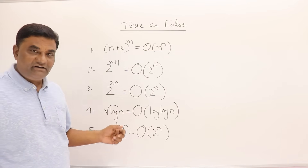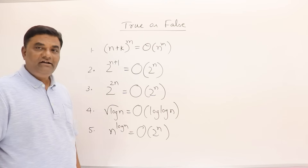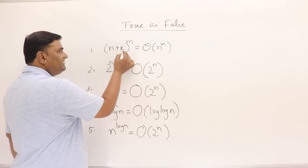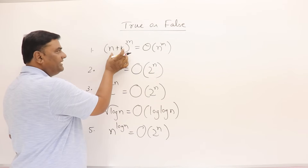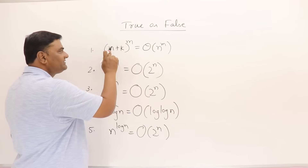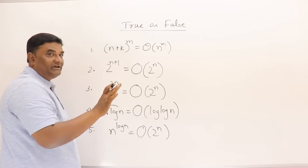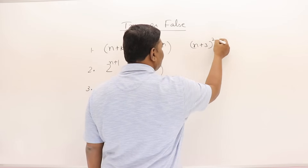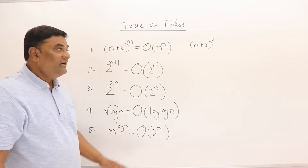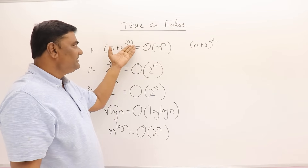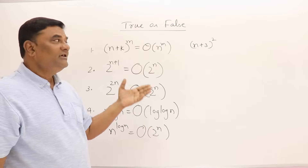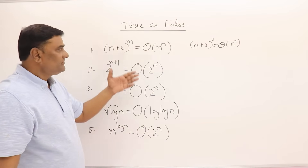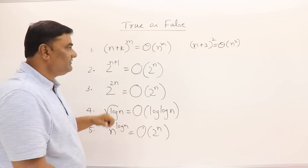Now some asymptotic notation true/false problems. First: (n + k)^m = Θ(n^m). Opening the binomial, the highest-degree term is n^m — for example, (n+3)² gives n² as the highest term. So (n+k)^m is Θ(n^m). This statement is correct.